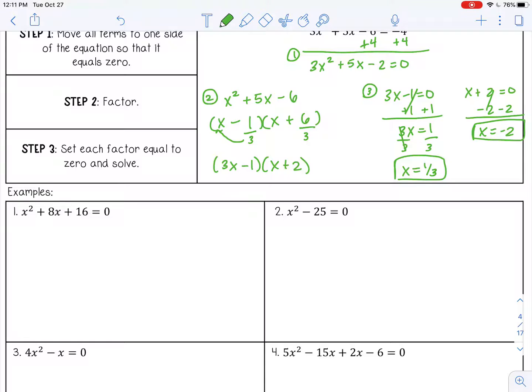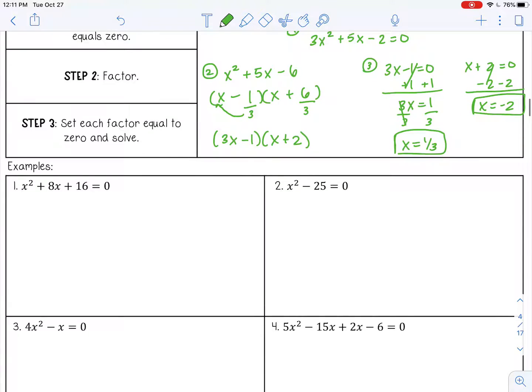Let's try some more. Number one, this is a trinomial where a is one, so we don't have to multiply a times c, we can just factor. I'm looking for factors of 16 that'll give me eight. One and 16, two and eight, four and four. Four and four will work, positive four and positive four.